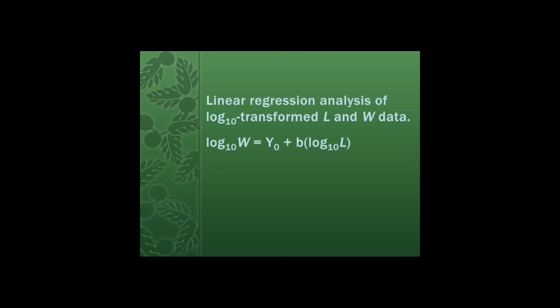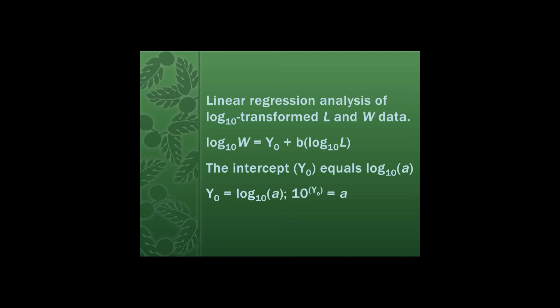The results of that linear regression analysis will give us the equation for a line. It turns out that the intercept — or the y-sub-zero value for that line — equals the logarithm of that constant a that we're looking for. So y-sub-zero equals the logarithm of a, and we just have to rearrange that equation to solve for a. Doing that, we get 10 raised to the power of the value for the intercept, or y-sub-zero, which gives us that constant a.